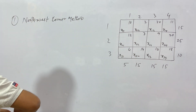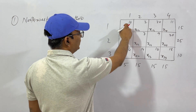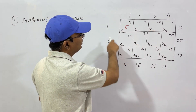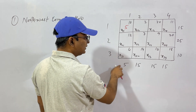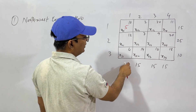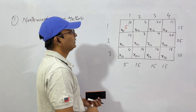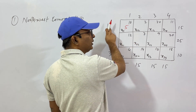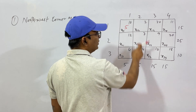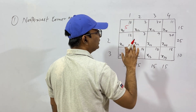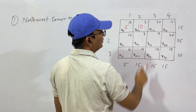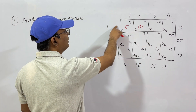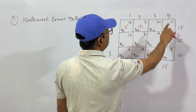Starting at this point, the demand is 5 — allocate maximum to it. You have 15 items from the first unit. Since the demand is 5, you allocate 5, so X11 = 5. Now there are 10 items left from this unit. The second unit has demand of 15, but we only have 10 left — so you give 10. The first row is complete: 5 plus 10 equals 15 items.